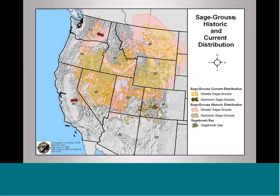Gunnison sage-grouse had been proposed as endangered under the Endangered Species Act with 1.2 million acres of proposed critical habitat. Mono Basin or bi-state sage-grouse will be considered for listing before September 2013. The Columbia Basin and range-wide population of greater sage-grouse will be considered for listing in fiscal year 2015.